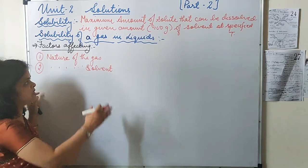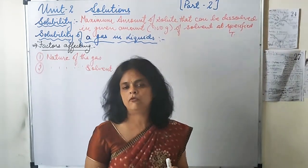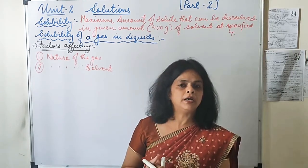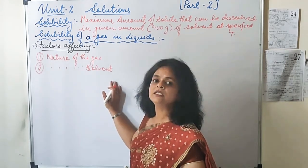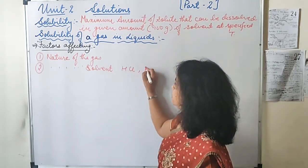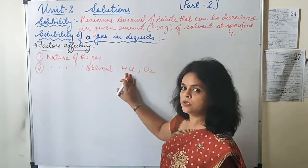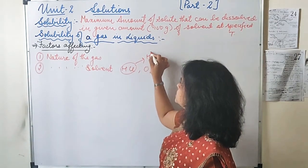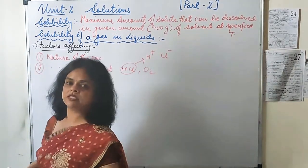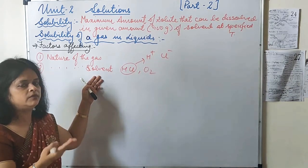The nature of the solvent or the liquid in which the gas is going to dissolve affects solubility as follows: gases which can form ions in water are more soluble in water. Gases which can ionize to form ions are more soluble in water compared to any other solvent. For this reason, HCl is more soluble compared to oxygen, because HCl can dissociate to form H⁺ and Cl⁻. So if the solvent causes ionization of the gas, the gas will be more soluble.